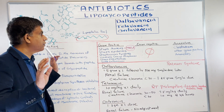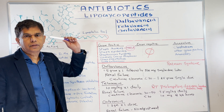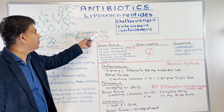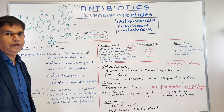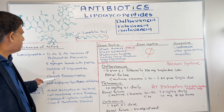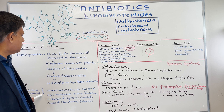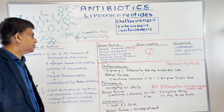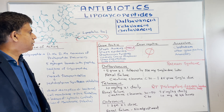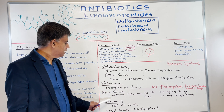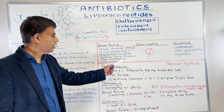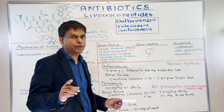Let's do a quick review. Lipoglycopeptide: vancomycin belongs to the glycopeptide class; lipoglycopeptides have the same structure but with a lipophilic tail. The three drugs are dalbavancin, telavancin, and oritavancin. Mechanism of action: they attach to the D-alanine D-alanine terminus, form five hydrogen bonds with the peptide backbone, and prevent transpeptidation. Telavancin and oritavancin also disrupt the bacterial cell membrane causing cytosolic leakage. Coverage: MRSA is the key word — no gram-negative coverage, but gram-positive anaerobic coverage is present. Telavancin can cause QT prolongation and metallic taste. Oritavancin needs no renal dose adjustment. All can cause Redman syndrome — remember, it's not an allergic reaction; slow infusion is the key.